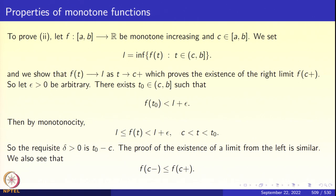Let ε > 0 be arbitrary and invoke the definition of infimum. There exists a t₀ between c and b, c excluded, such that f(t₀) < l + ε. By monotonicity, we know that f(t) ≥ l and f(t) < l + ε for c < t < t₀, because f(t₀) < l + ε and if t < t₀ then f(t) ≤ f(t₀), so f(t) < l + ε; but l is the infimum so f(t) ≥ l. The requisite delta is t₀ − c. Using the epsilon-delta definition, we have established that the monotone function has a right-hand limit. The case of the left-hand limit is very similar.